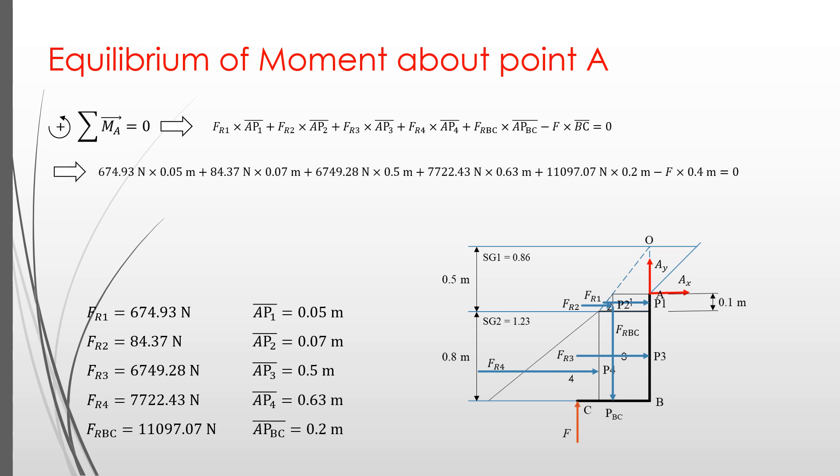We put all the values that we have in the equation. We obtain the value of F equals 26,247.1 newton, or roughly equals 26.25 kilo newton. We obtain a positive value of force, it means its direction is correct, which is upward.